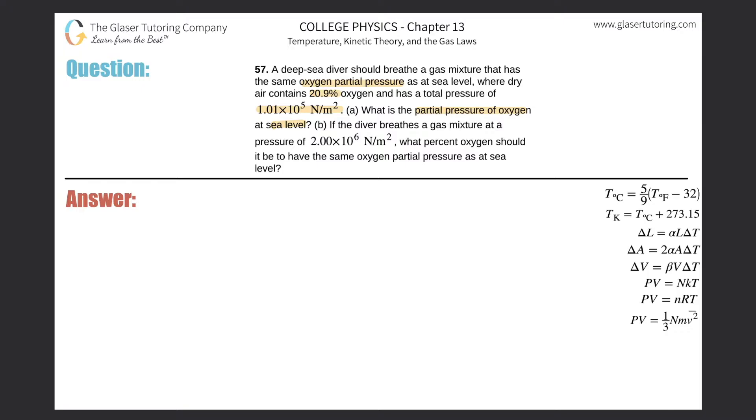So basically, we have to remember the ideas of partial pressure. Let me write this formula out quickly. It's basically just an idea that the partial pressure of a certain gas, and in this case we're talking about oxygen, will equal the fraction of oxygen in that gas sample multiplied by the total pressure.